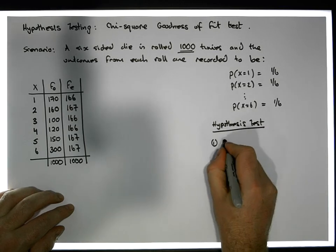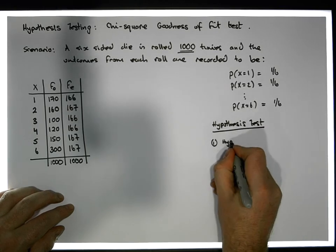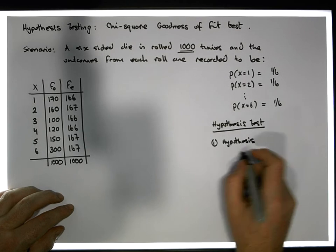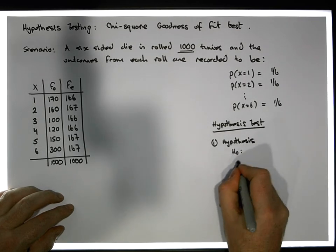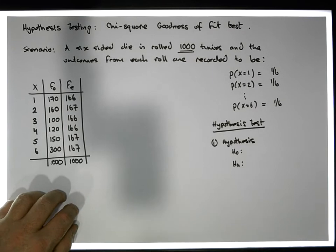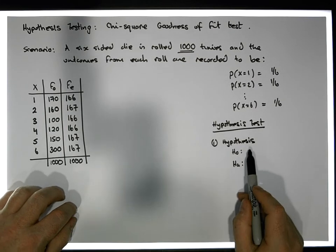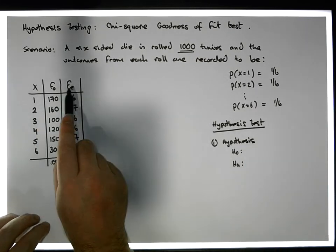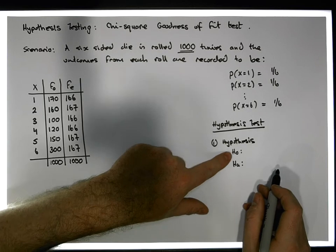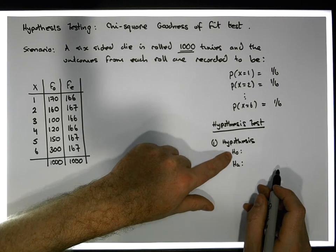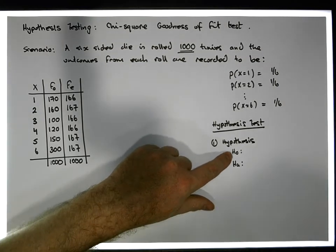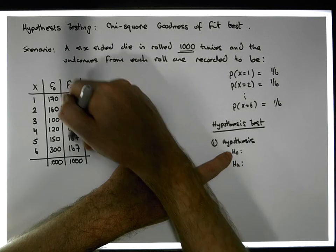Step one is to define the hypothesis. Don't forget we have a null position — we have H0 and we have HA, an alternative position. The default position is that there's no difference between the observed and the expected. The default position is that the observed follow the specified distribution.